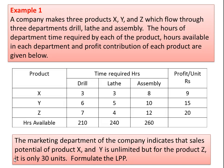Now look at the example. A company makes three products x, y, z which flow through three departments: drilling, lathe, and assembly. Product x requires 3 hours of drilling, 3 hours of lathe, and 3 hours of assembly. Product y requires 6 hours of drilling, 5 hours of lathe, and 10 hours of assembly. Product z requires 7 hours of drilling. The hours available in each department are: drilling 210 hours, lathe 240 hours, and assembly 260 hours.